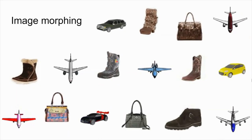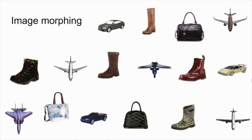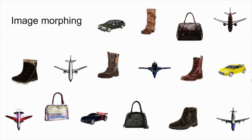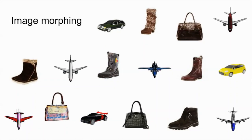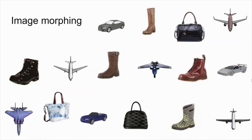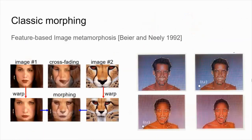In Image Morphing, endpoint images are processed to generate a sequence of transformation between them, consisting of changes in shape and texture. Classically, operations of warping and crossfading are employed upon the inputs to synthesize in-between frames, ultimately providing a sequence of transformation.